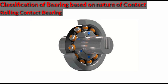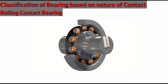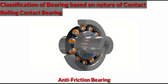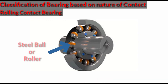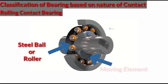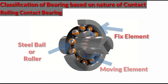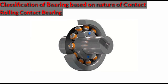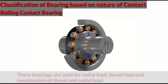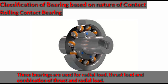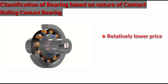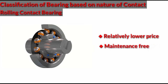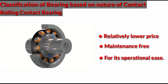Rolling contact bearings are also known as anti-friction bearings due to their low friction characteristics. In rolling contact bearings, steel balls or rollers are interposed between the moving and fixed elements. The ball offers rolling friction at two points for each ball or roller. These bearings are used for radial load, thrust load, or a combination of thrust and radial load, and are extensively used due to their relatively lower price, being almost maintenance-free and for their operational ease.